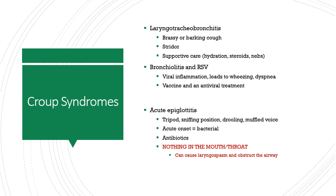Bronchiolitis and RSV start as an upper airway issue but lead to a lower airway inflammation — it's a viral URI that leads to a lower airway viral infection with wheezing and dyspnea. There is a vaccine available for RSV and an antiviral treatment, ribavirin, but that is a teratogen. No one who's pregnant can be in the room while the child is receiving the nebulized antiviral treatment, and pregnant caregivers can't take care of these children if they're receiving that medication.